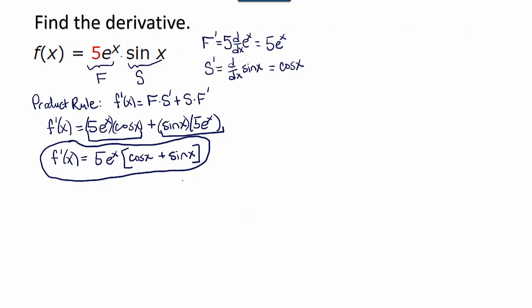In another video, I demonstrated how to find the derivative of this function, which turns out to be 5e to the x times the cosine of x plus the sine of x. You can follow the link to see how that derivative is worked out.